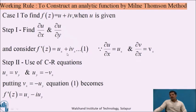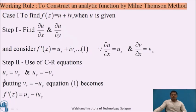On the right-hand side of equation 1, ux is known since we just determined it. However, vx is the partial derivative of the imaginary part, which is not known to us. Since we are constructing an analytic function f(z), its real and imaginary parts must satisfy the Cauchy-Riemann (CR) equations. In Step 2, we use the CR equations to replace the unknown partial derivative in terms of the known one. The CR equations are: ux = vy and uy = −vx.